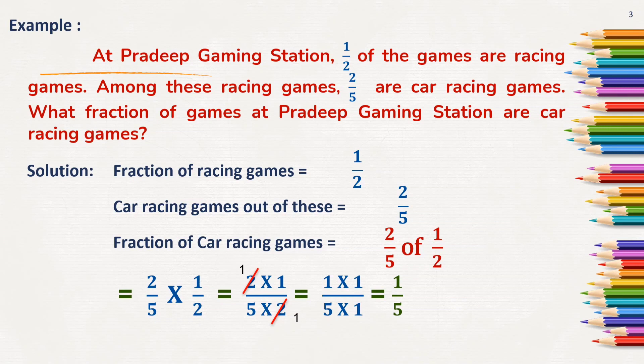So, here now we are left with 2 one time 1 into 1, 5 into 1. So, we got the answer as 1 by 5 of all the games are car racing games.